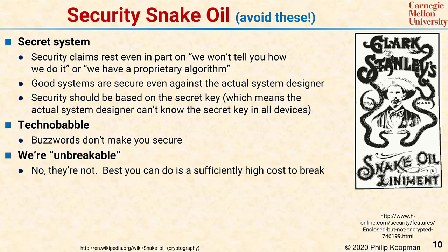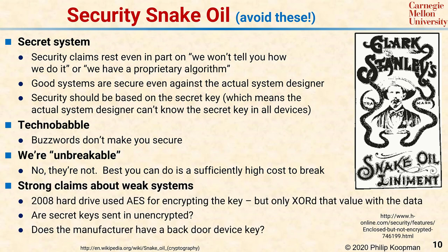Finally, the trickiest one is people who make strong claims about weak systems. As a historical example, in 2008, there were some hard drives that said they used AES — which is in fact a good cryptographic algorithm — for encrypting the data on the disk. But they didn't actually do that. What they did was use AES for encrypting the password, the key for the disk, and that resulted in a particular value. Then that value was XORed with all the data on the disk — the same value was used to XOR across the entire disk. In order to attack the system, all you needed was one known sector of data. You could take the known value, XOR with the encrypted value, extract the key, and decrypt the entire disk with basically zero effort. So they said they use strong cryptography, but they used it in such a ridiculous way that it provided almost no security at all.